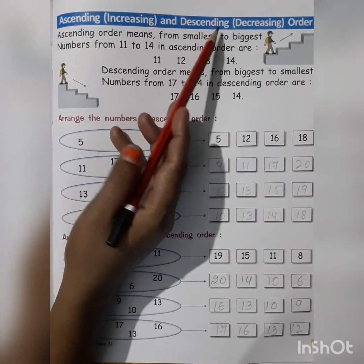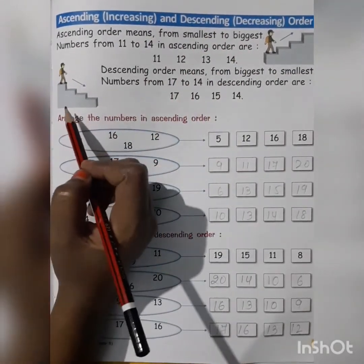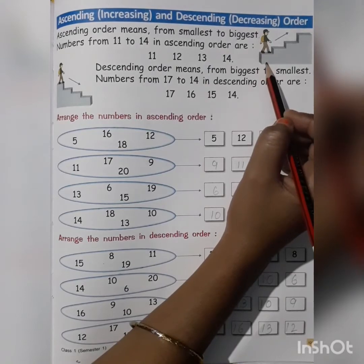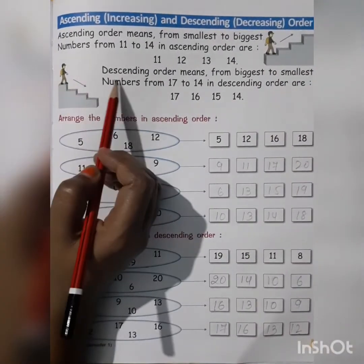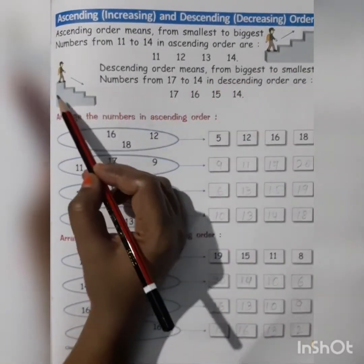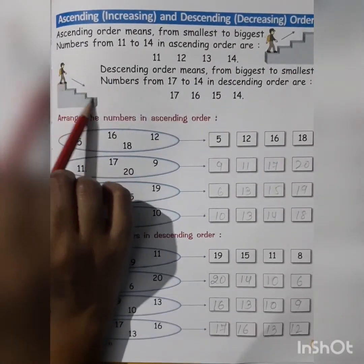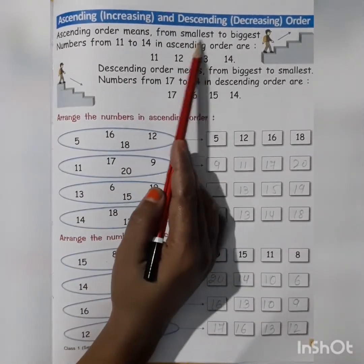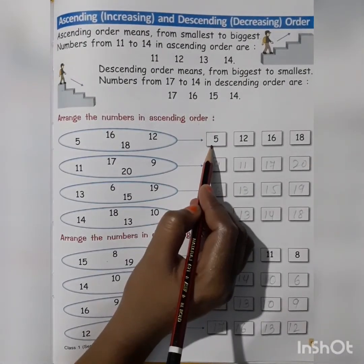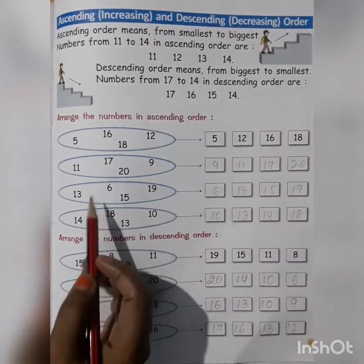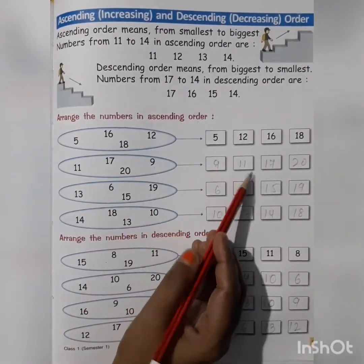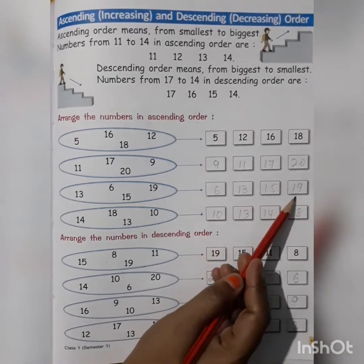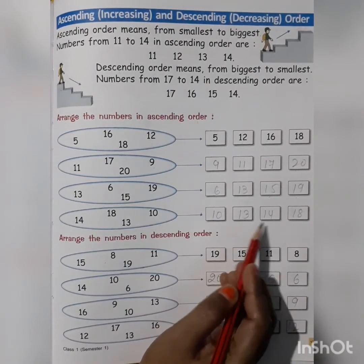Now we are going to learn about ascending, increasing and decreasing order. Ascending order means from the smallest to the biggest. The boy is starting from the smallest stair and going upward. Descending order means from the biggest to the smallest — the boy is standing on the biggest stair and coming down. Arrange the numbers in ascending order: 5, 12, 16, 80. Then: 9, 11, 17, 20. Then: 6, 13, 15, 19. Then: 10, 13, 14, 18.